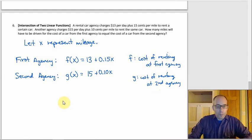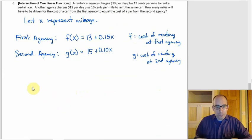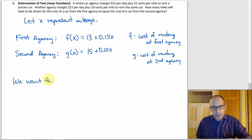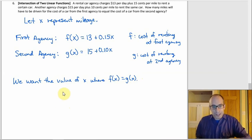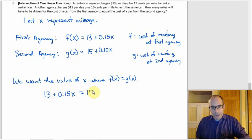For the first agency, F(X) equals 13 plus 0.15X — the flat $13 fee plus 15 cents per mile. For the second agency, G(X) equals 15 plus 0.10X. We want to find the mileage X where F(X) equals G(X), so we set them equal: 13 plus 0.15X equals 15 plus 0.10X.